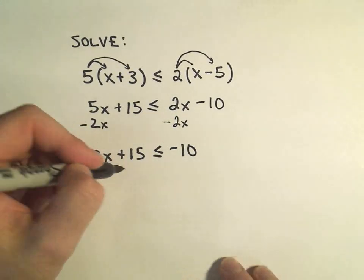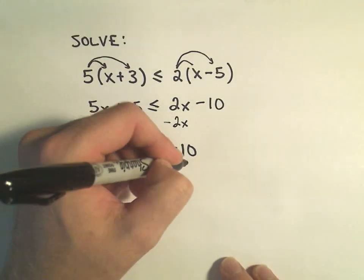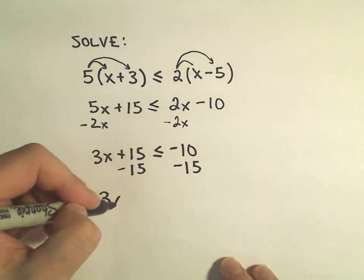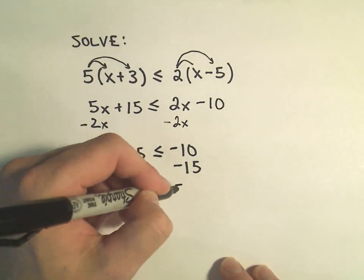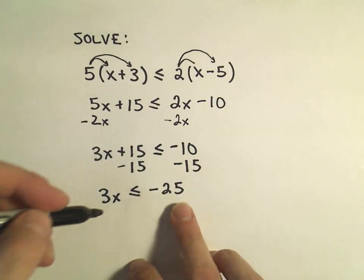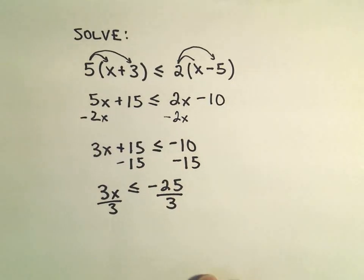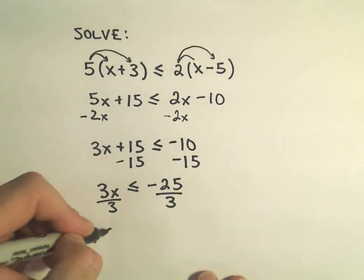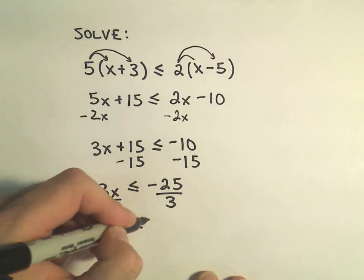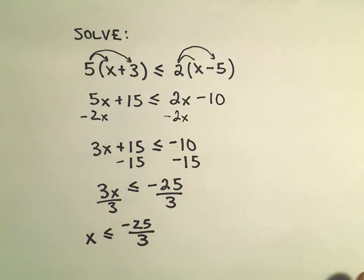And again, now I'm just going to subtract the 15 from both sides. That'll give me 3x is less than or equal to negative 25. And now I'm just going to divide both sides by 3. And this says x has to be less than or equal to negative 25 over 3.